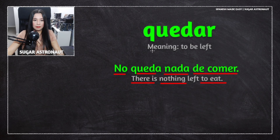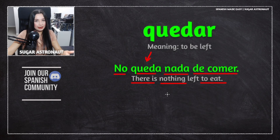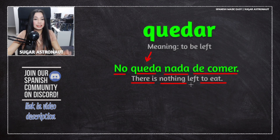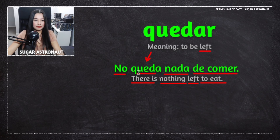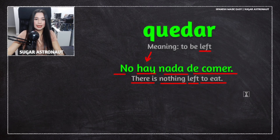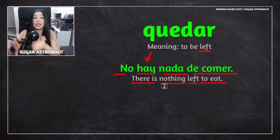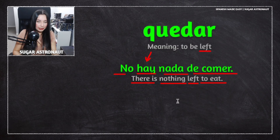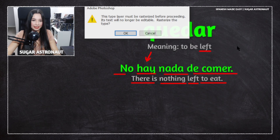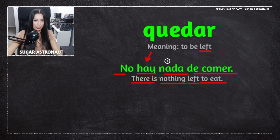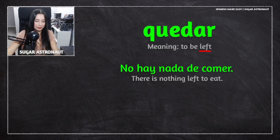Remember we're using 'quedar,' so the meaning includes 'left' — there is nothing left to eat. You can also say 'No hay nada de comer,' which is a more literal translation meaning 'there is nothing to eat.' In Spanish, 'no hay nada' literally means 'there is not anything.' There are some differences between Spanish and English here, so keep that in mind.